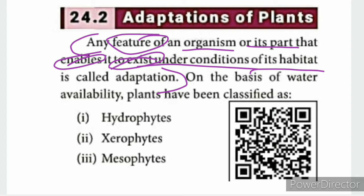We can classify plants based on certain conditions. In the 9th standard, plants are classified on the basis of water availability.